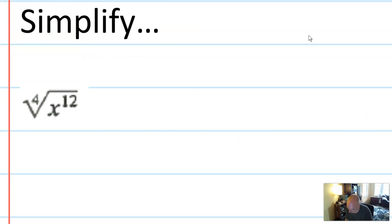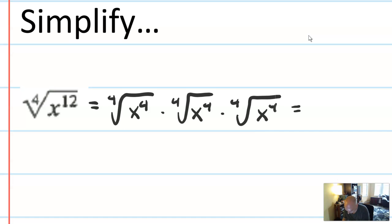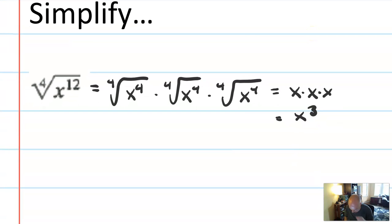Just a couple more. And I want to kind of get into the more abstract realm. So here I just have the 4th root of x to the 12th. And I want to show you how fractional exponents can be super useful here. What I could do is write this as the 4th root of x to the 4th times the 4th root of x to the 4th times the 4th root of x to the 4th. Which would give me x times x times x or x cubed.